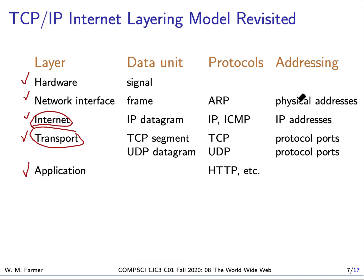For addressing: at the network interface layer we have physical addresses, where the kind of addressing depends on the underlying physical network technology. At the internet level we have IP addressing, and at the transport level we have protocol ports.